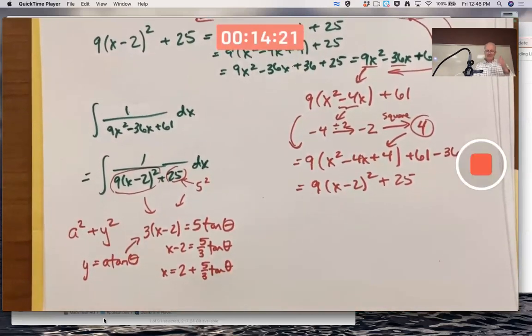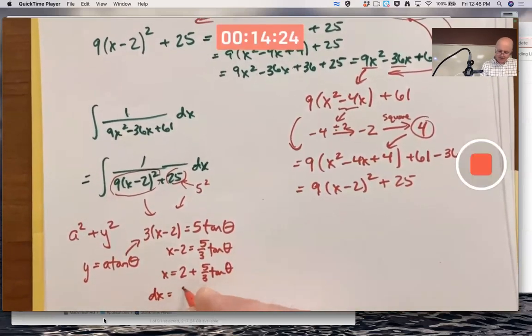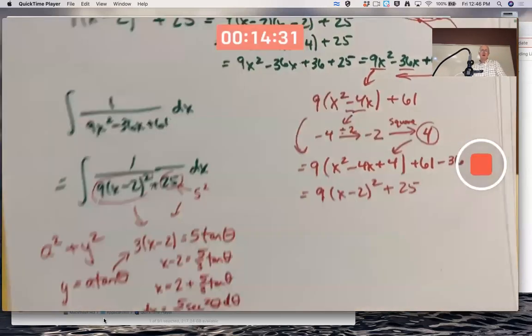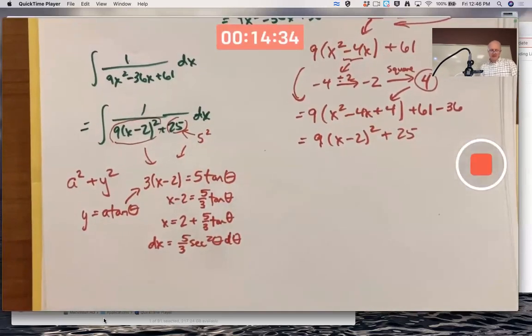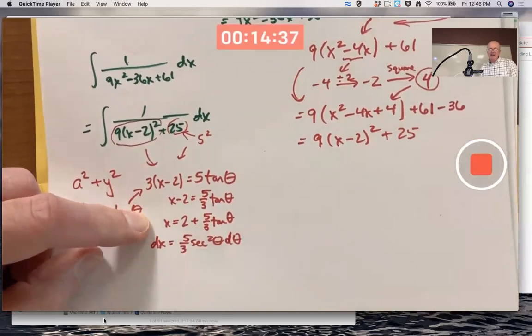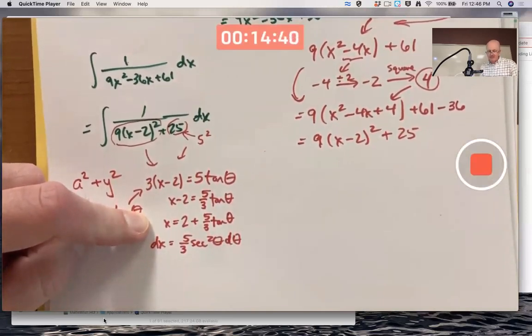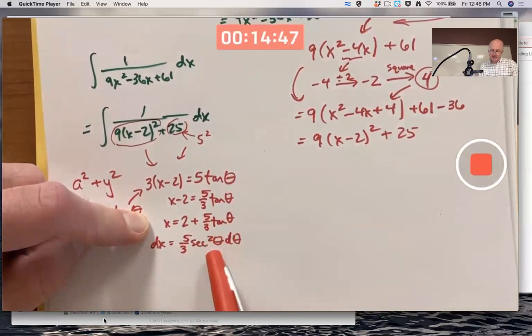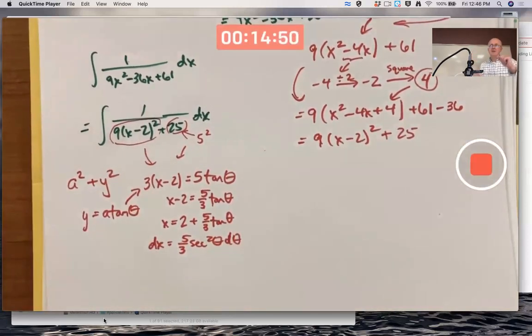And that makes it a little easier to see that dx is going to be 5/3 secant squared θ dθ. Really, what I'm doing there is I'm finding dx/dθ, the derivative of x with respect to θ. The derivative of 2 is 0, the derivative of 5/3 tangent θ is 5/3 secant squared θ. And then I'm pretending to multiply both sides by dθ.